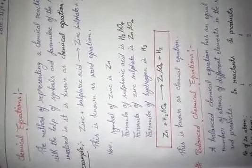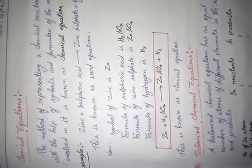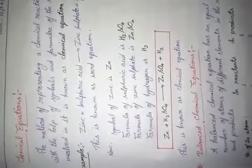The method of representing a chemical reaction with the help of symbols and formulae of the substances involved in it is known as a chemical equation. In the last class we saw a plus b gives c plus d — where a and b are reactants and c and d are products, represented by their formulae.